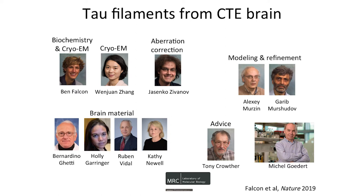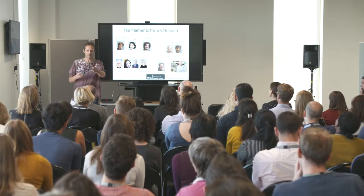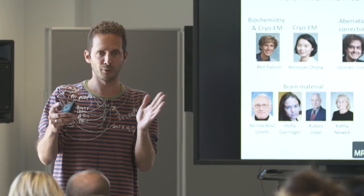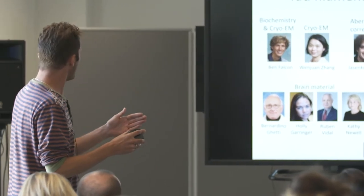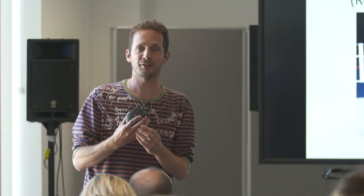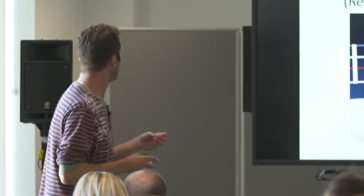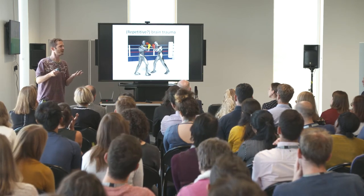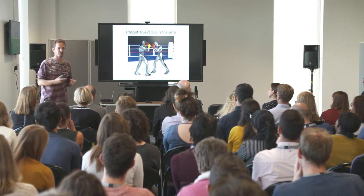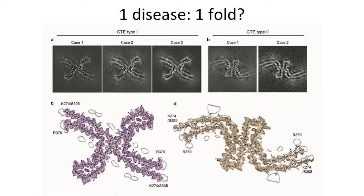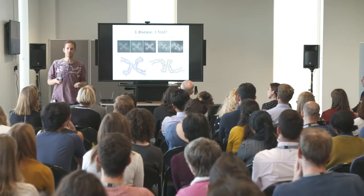The last disease I'll discuss is the only tauopathy with extremely clear environmental factors. If you expose yourself to repetitive head trauma — voluntarily or involuntarily — you're at risk of developing chronic traumatic encephalopathy (CTE). This is a big issue with American football, and headers in football may also contribute. We had brains from two ex-professional boxers and an ex-professional American football player to study.